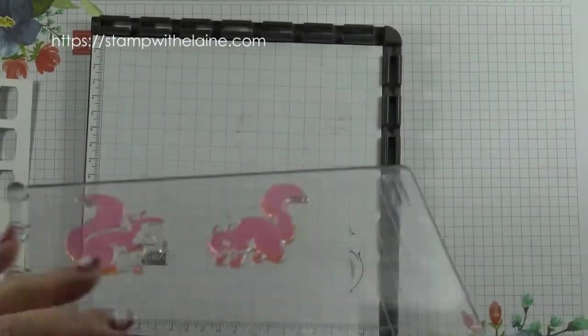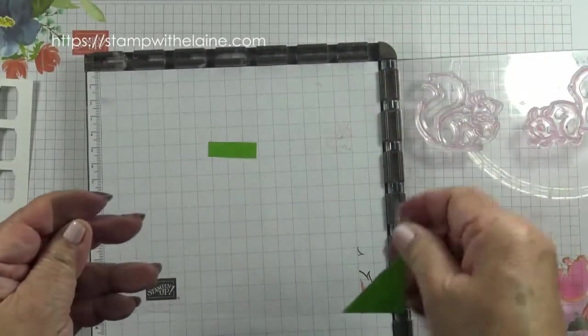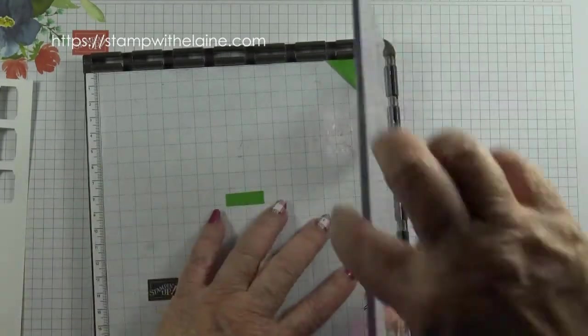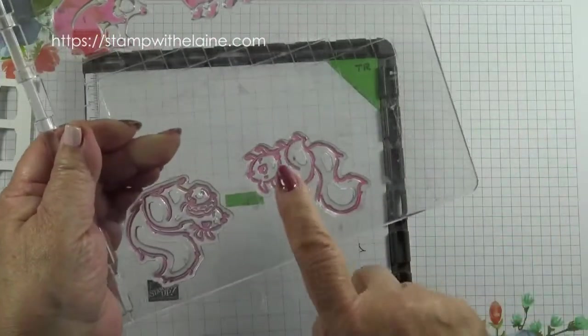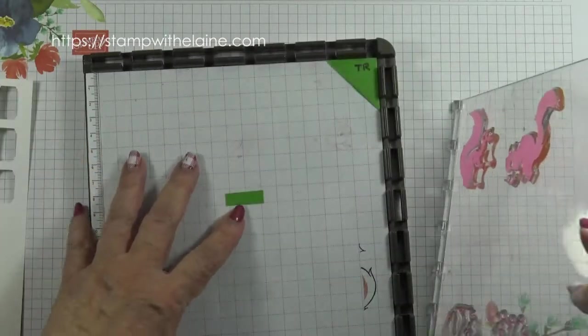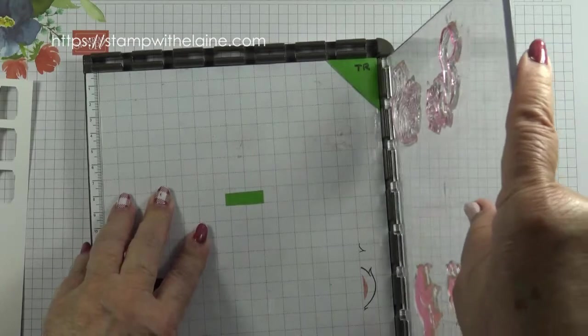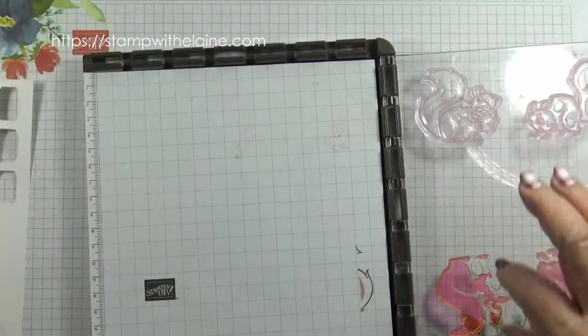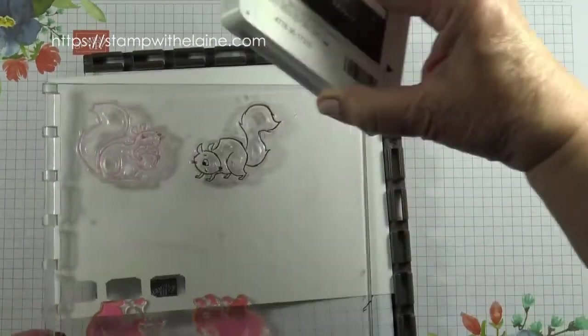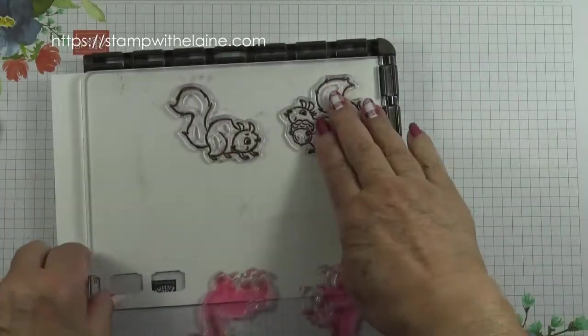Now I've mounted my squirrels onto the Stamparatus because I'm using an acetate sheet. I've tried to align the second solid stamp right over the linear image so that it would marry up and once you've got that then you can take the guesswork out of it. I'm going to stamp that in early espresso first. So ink both of these up and stamp.